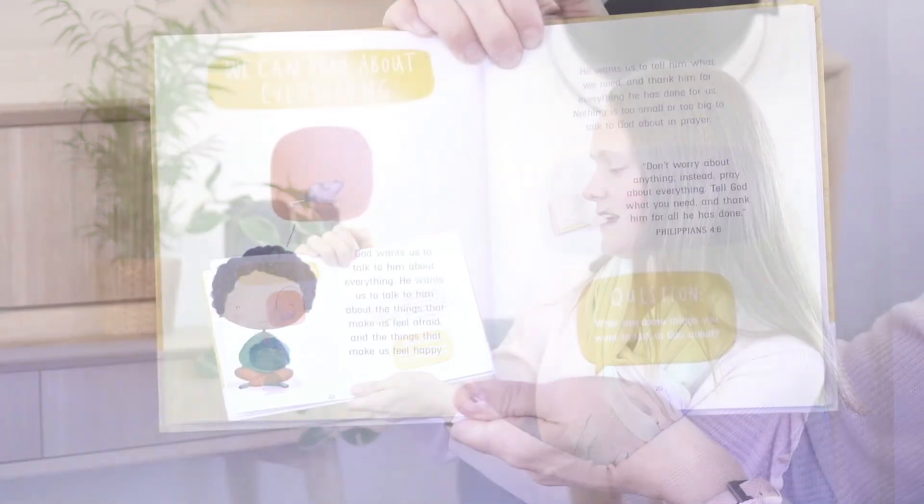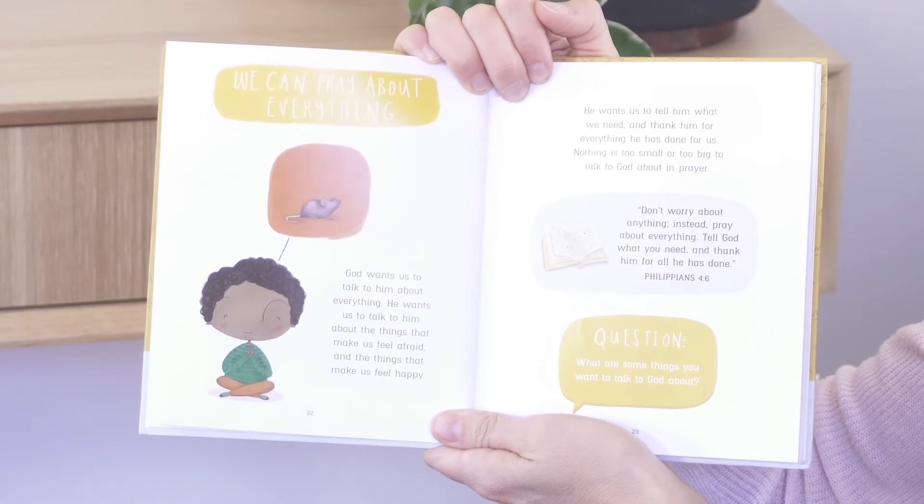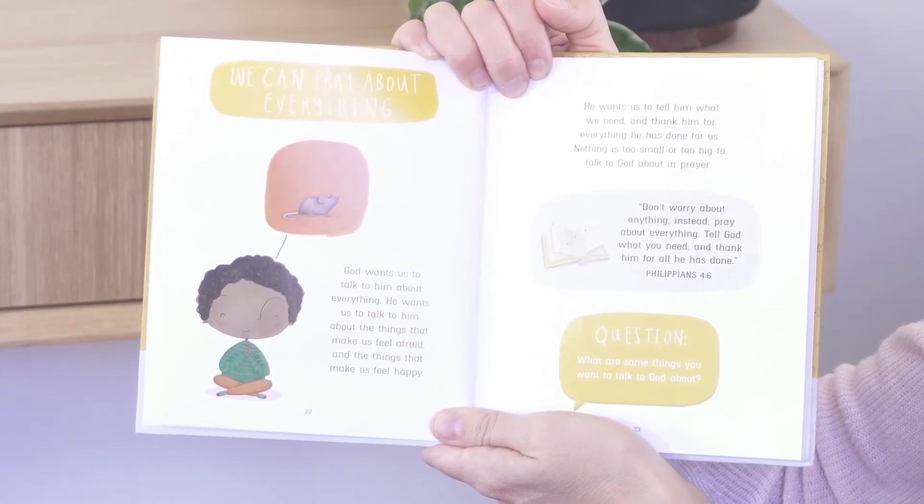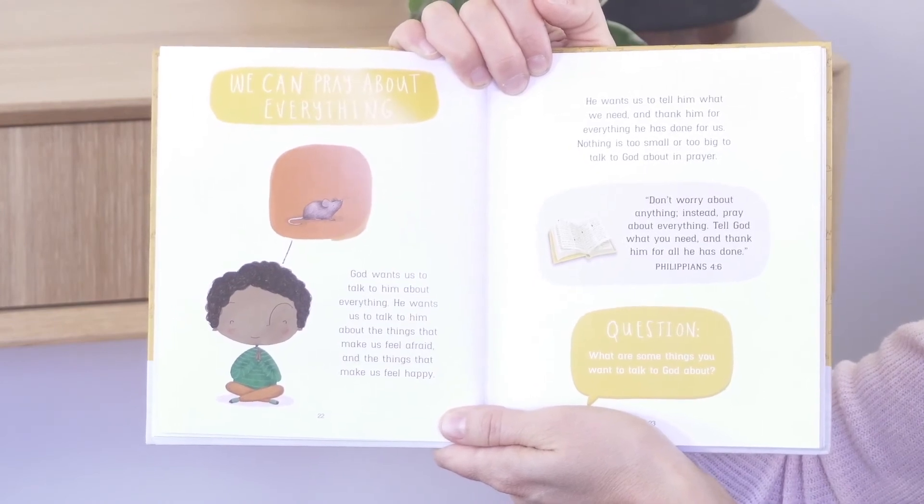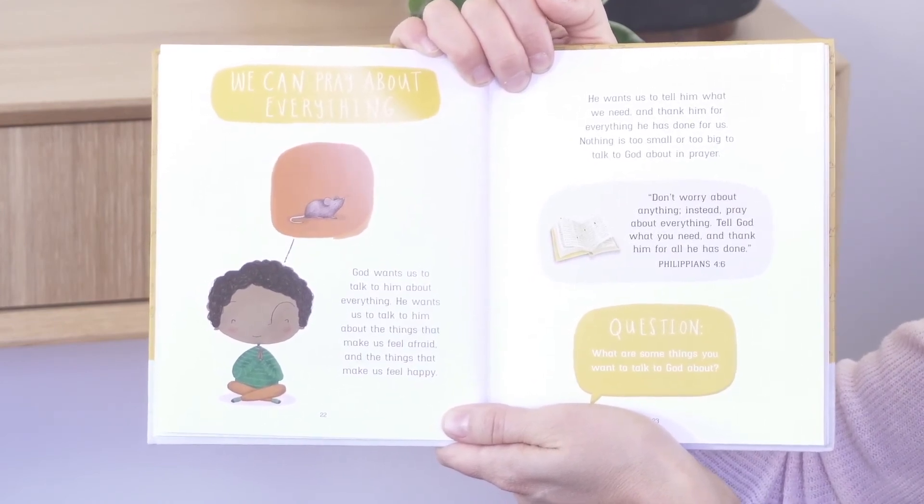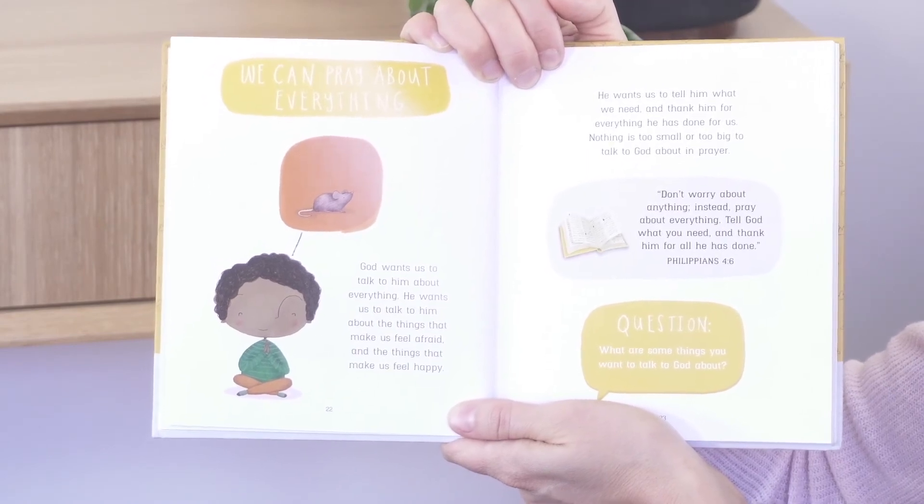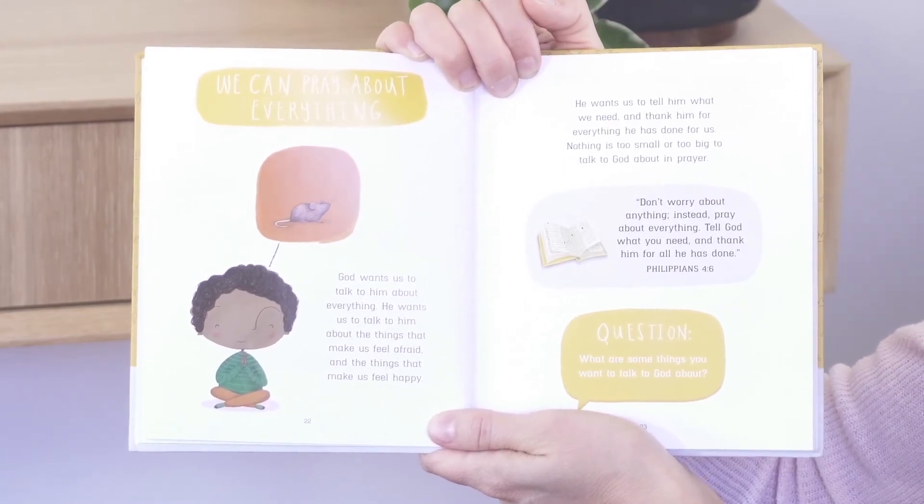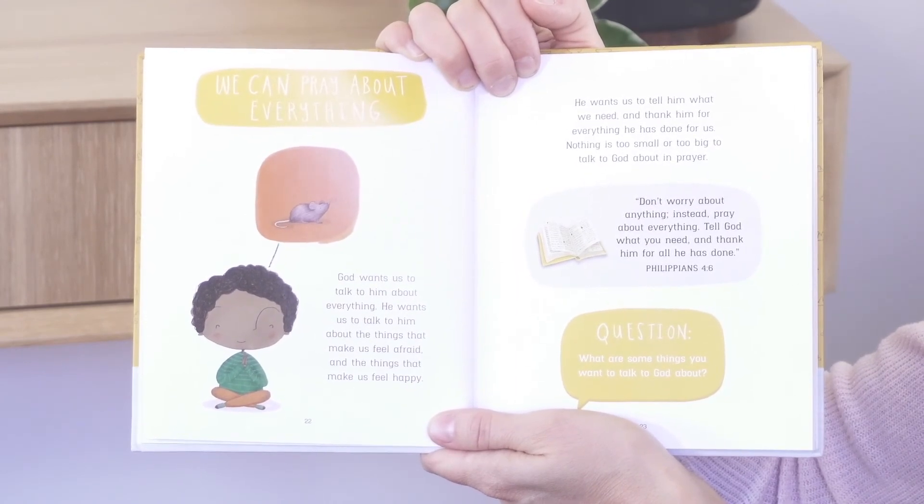We can pray about everything. God wants us to talk to him about everything. He wants us to talk to him about the things that make us feel afraid and the things that make us feel happy. He wants us to tell him what we need and thank him for everything he has done for us. Nothing is too small or too big to talk to God about in prayer.